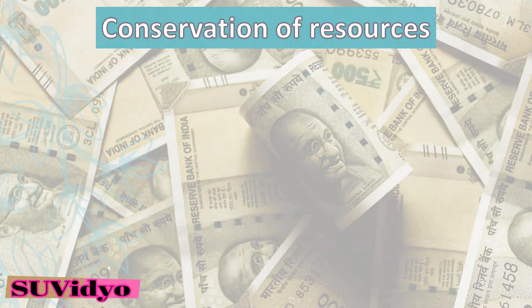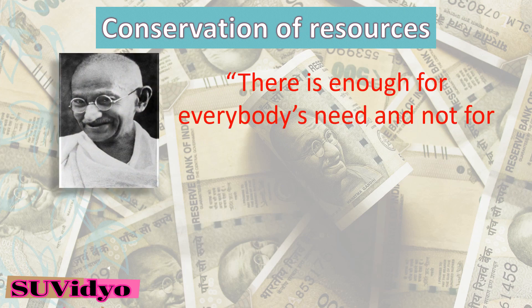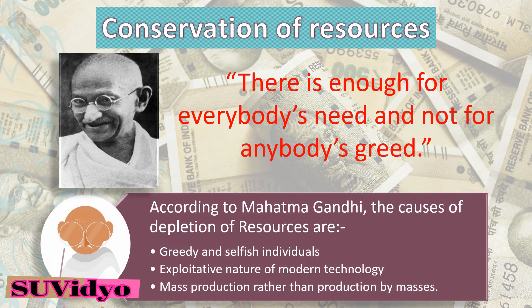Since conservation of resources has been a global concern, Mahatma Gandhi said there is enough for everyone's need but not for anybody's greed. According to Mahatma Gandhi, the causes of depletion of resources are greedy and selfish individuals, the exploitative nature of modern technology, and mass production rather than production by masses.